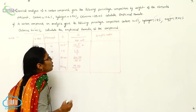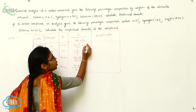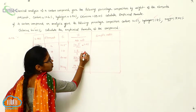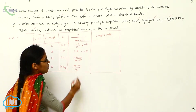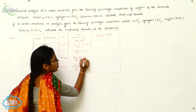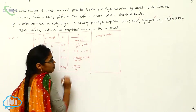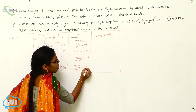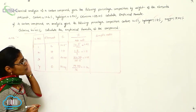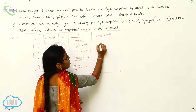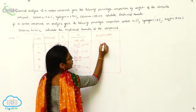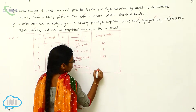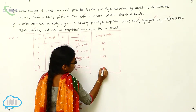From these calculations, you get the value 1.21 for Carbon. For Hydrogen, 1.8 divided by 1 gives 1.8. For Chlorine, you get 1.81. And for Oxygen you get 1.2. So the values are: 1.21, 1.8, 1.81, and 1.2.